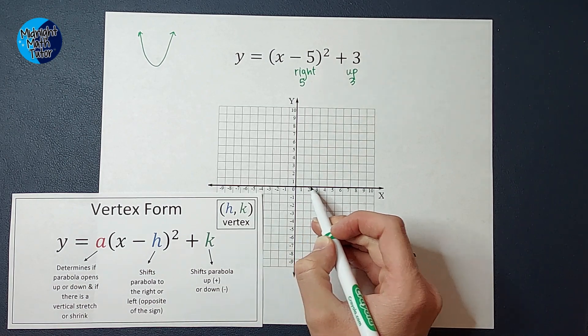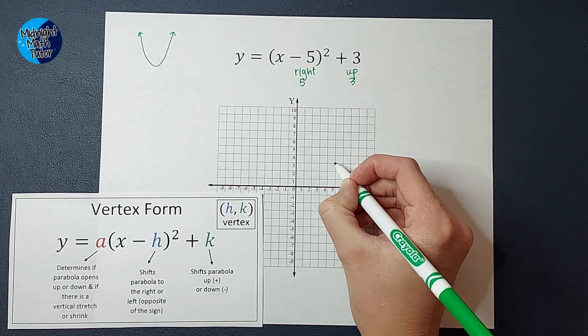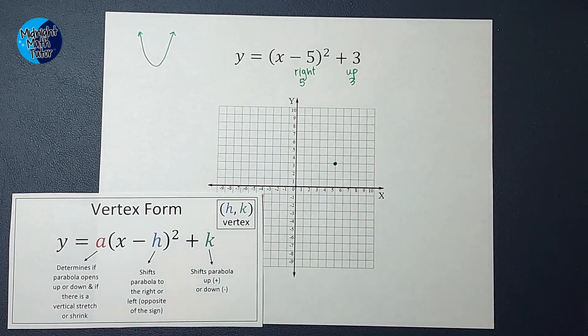Parent graph starts at 0, 0, so I'm going to go to the right five. One, two, three, four, five, and up three. One, two, three. That is my new vertex. Not too bad, right?